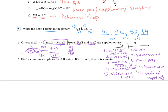Last problem: 'If it is cold, then it is snowing.' We need to find a counterexample. What if it was 45 degrees outside and raining? It could be cold and not snowing. If we're outside and it's cold and raining, that's not the same as snowing — that's our counterexample. Here in Southern California, it can get cold and rainy without snowing.